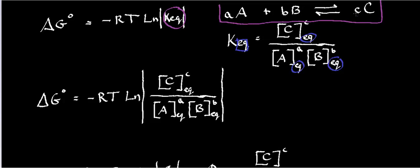The expression is the product of the products divided by the product of the reactants. We only have C as a product, so it's the concentration of C to the little c power — whatever the coefficient in front is, that's the power of the concentration. Then divide by the product of the reactants: concentration of A to the little a power, divided by concentration of B to the little b power.